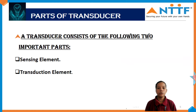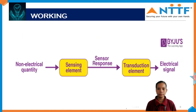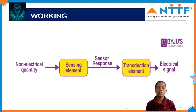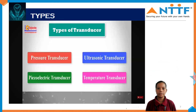There are two major parts of the transducer. First, the sensing element, and second, the transduction element. The sensing element senses physical quantities such as light, pressure, or temperature and sends the signal to the transduction element, which then converts the sensed signal into electrical signals.